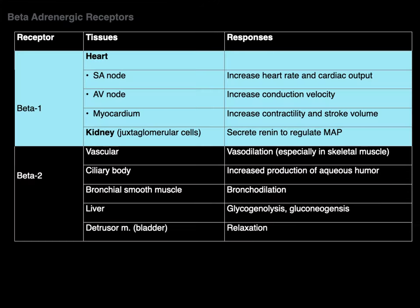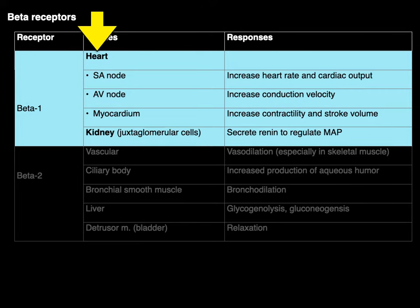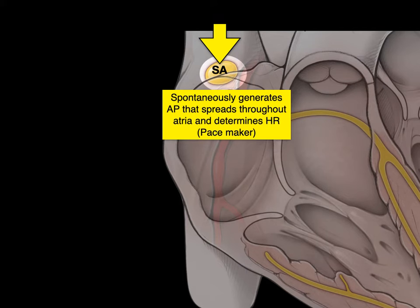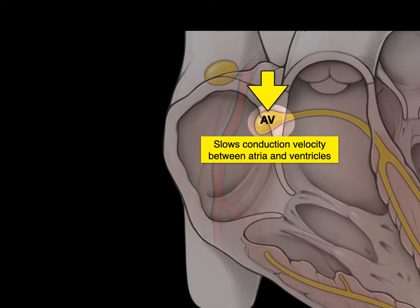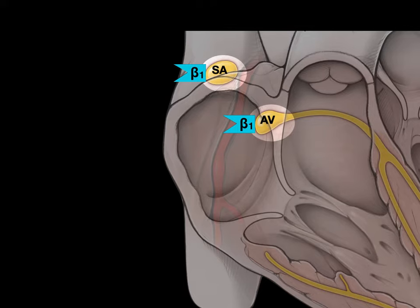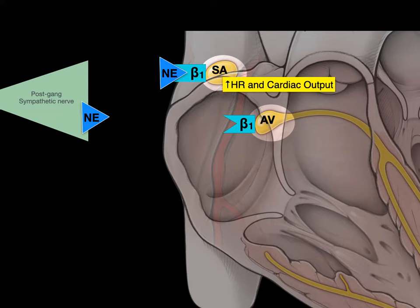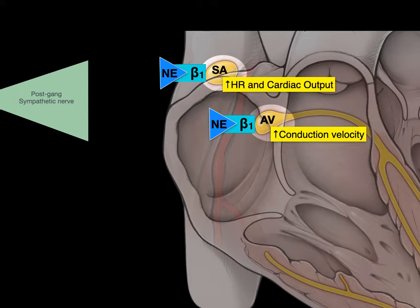Now let's talk about beta-adrenergic receptors, starting with the beta-1 receptors on the heart. The SA node is the pacemaker — it spontaneously generates an action potential that spreads throughout the atria and helps determine heart rate. The AV node slows the conduction velocity of that action potential between the atria and ventricles. Both the SA node and AV node have beta-1 adrenergic receptors. When sympathetics release norepinephrine binding to the beta-1 receptors on the SA node, you can increase heart rate, increasing cardiac output. Norepinephrine binding to the beta-1 receptors on the AV node increases the conduction velocity of the action potential going from atria to ventricles.